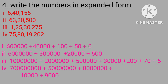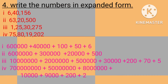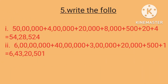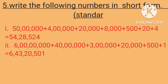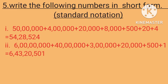Like this you need to write each and every one — two, three, four — each and everything you need to expand and write down. Fifth bit — write the following numbers in short form, standard notation. Look at here: fifty lakhs plus four lakhs plus twenty thousand plus eight thousand plus five hundred plus twenty plus four. The answer is fifty-four lakhs twenty-eight thousand five hundred and twenty-four.